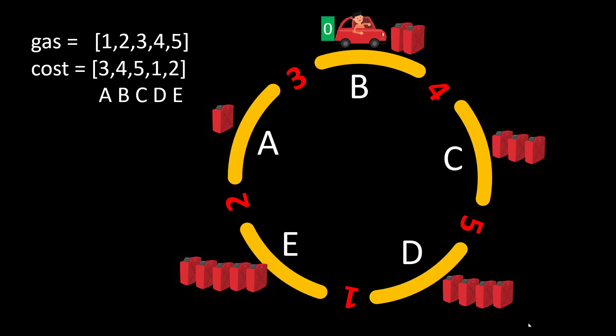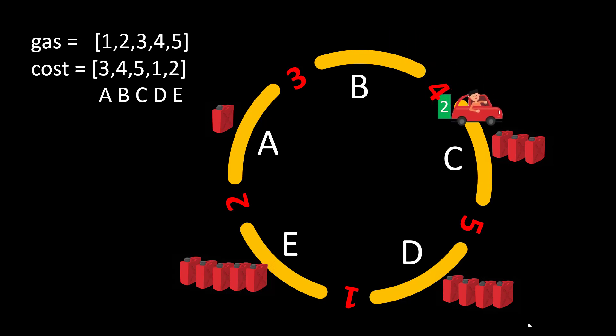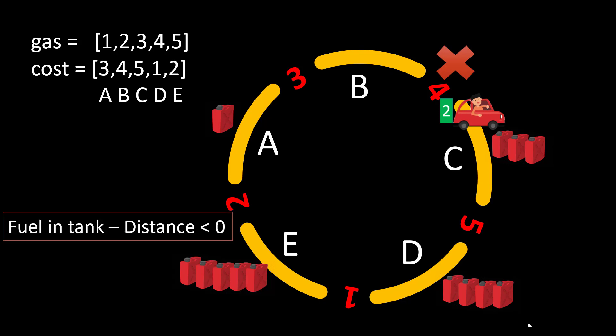Let's see what a valid and an invalid move looks like. If we started from index b, the amount of fuel we get at that point is 2 — so we fuel our car with 2 units of gas. We can only move in the clockwise direction, so we move from b to c. The cost associated with moving from b to c is 4 and we do not have that much fuel, so this is an invalid movement. Whenever the fuel in the tank minus the cost is less than zero, we cannot make that move.